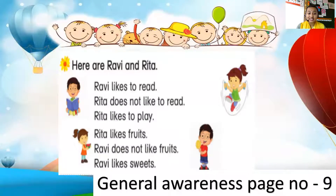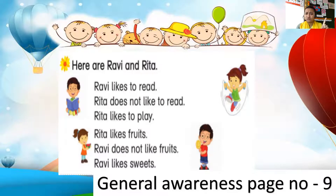Rita likes to eat fruits. But Ravi does not like fruits. Ravi likes sweets. He does not like fruits.